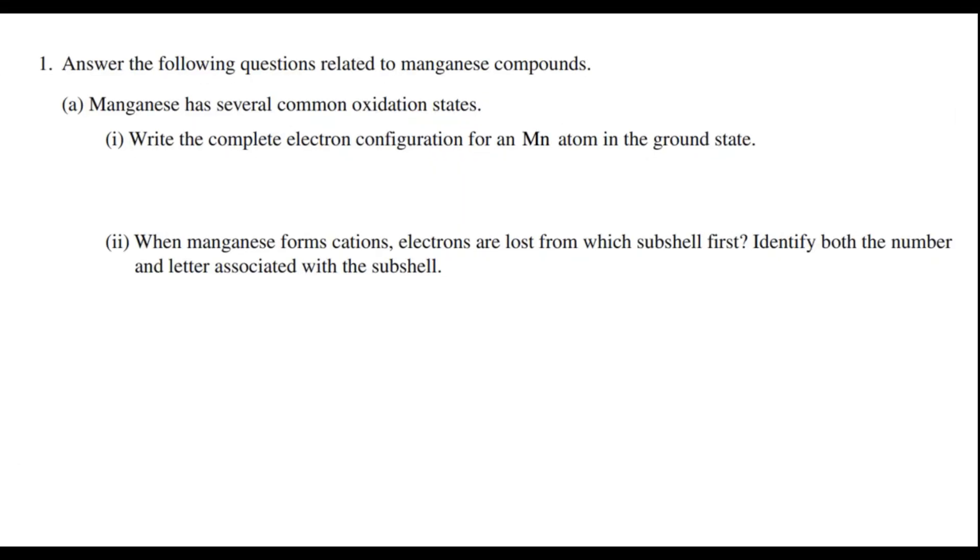I do not work for College Board. I'm just a chemistry teacher who's been teaching AP for 23 years, and sometimes I make a mistake. Remember that any answer that is chemically and factually correct will be accepted by the AP readers, even if it doesn't match what's on their key. So with that in mind, here's question 1. In this question, we're asked several questions about manganese, and the first part says to write the complete electron configuration for manganese in the ground state.